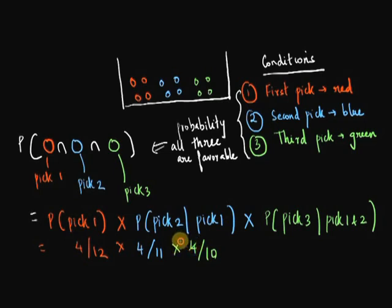So this will be 4 over 12 into 4 over 11 into 4 over 10. Here my 4 over 10 can be simplified as 2 over 5 and 4 over 12 will be 2 over 6. So when you multiply all of this, you get 16 over 330 or 0.02 or 2%.